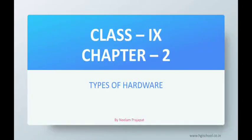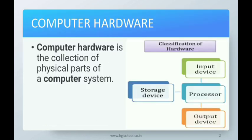Good morning everyone, today we are starting Chapter 2: Types of Hardware. Computer hardware is a collection of physical parts of a computer system — all the physical parts which are connected with the computer. Classification of hardware includes input devices, output devices, storage devices, and some devices inside the CPU.